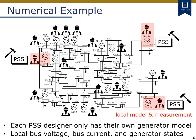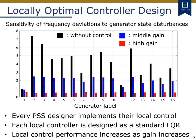Let's go back to the example of power systems control. We suppose that each PSS designer only has their own generator model and is accessible only to local output signals such as bus voltage, bus current, and local generator states. Then each designer designs and implements a PSS as a retrofit controller. This figure shows the control performance of the designed local controllers. In particular, each bar in the graph represents the sensitivity of frequency deviation to disturbances on generator states. For each generator, we consider three cases: no control applied, a middle-gain control applied, and a high-gain control applied, represented by black, blue, and red bars respectively. Each local controller is designed using a standard LQR technique.